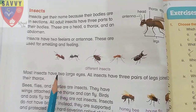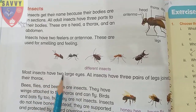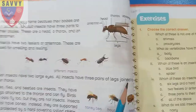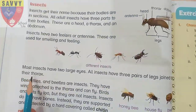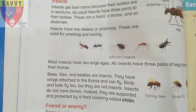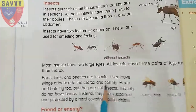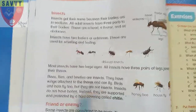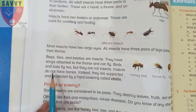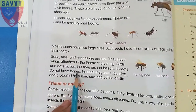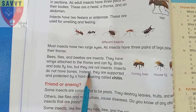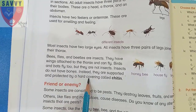All insects have three pairs of legs joined to their thorax. Bees, flies, and beetles are insects. Many insects have wings attached to their thorax and can fly. Birds can also fly, but they are not insects. Insects do not have bones; instead, they are supported and protected by a hard outer covering called chitin.